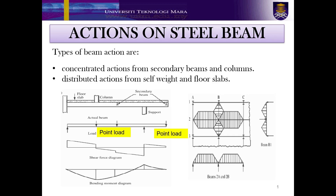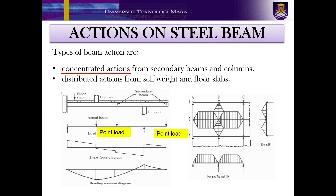Actions on a steel beam can be categorised into two. The first is concentrated actions, which distribute from secondary beams and columns, as highlighted in the slide.